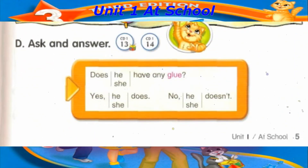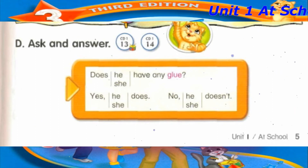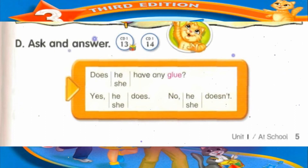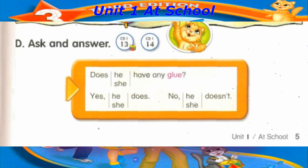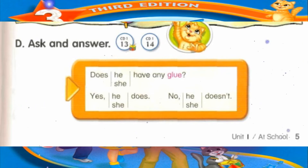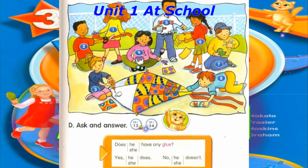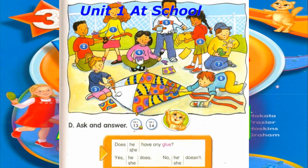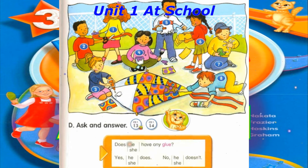Track 13. D. Ask and answer. Does he have any glue? Yes, he does. Does she have any glue? No, she doesn't. Track 14. D. Ask and answer. Number 1: Does she have any ribbon? Yes, she does.